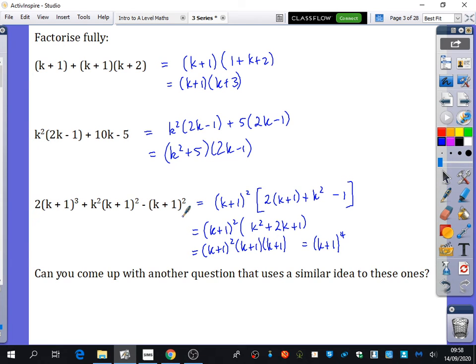So believe it or not, this messy algebraic sentence that we've got here is just the same as k plus 1 to the power of 4. Nice to see all of those techniques coming together. Really, I guess the whole thing here is, if something has got a common factor, like in this case it was k plus 1 squared,